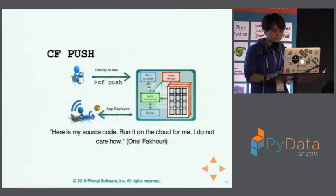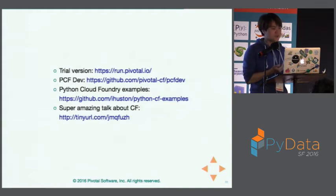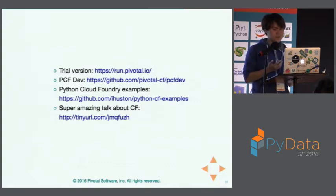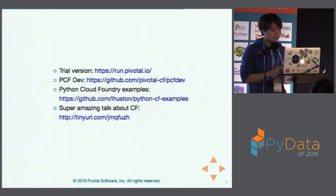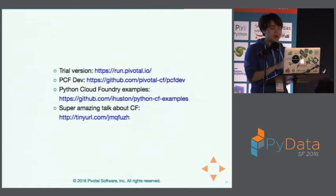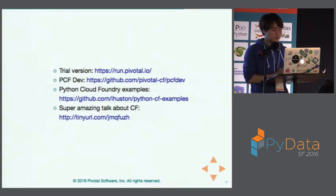You can register for a free trial at run.pivotal.io — I think it's 90 days. Or you could use the PCF Dev version, which is basically a local virtual machine. It's also good and it's free. On the GitHub repo for my colleague, there are many examples of how to push a Python app on Cloud Foundry. There's also a super amazing talk on YouTube from one of our technical program managers about CF — he's called Onzi, so check it out.